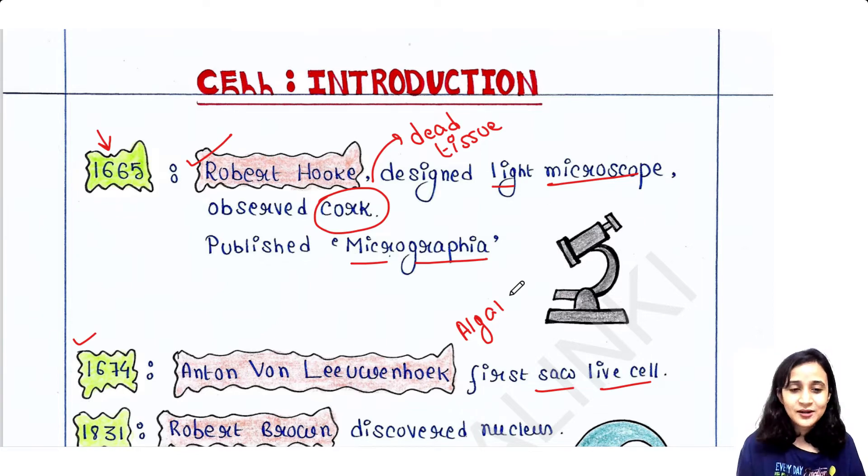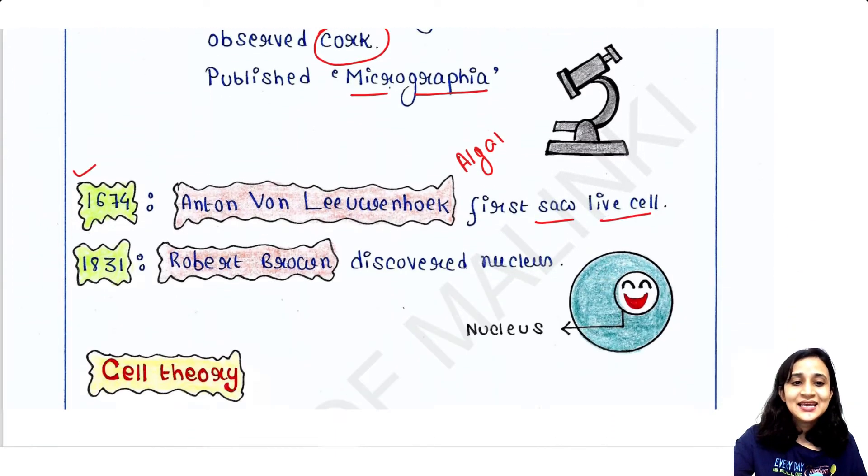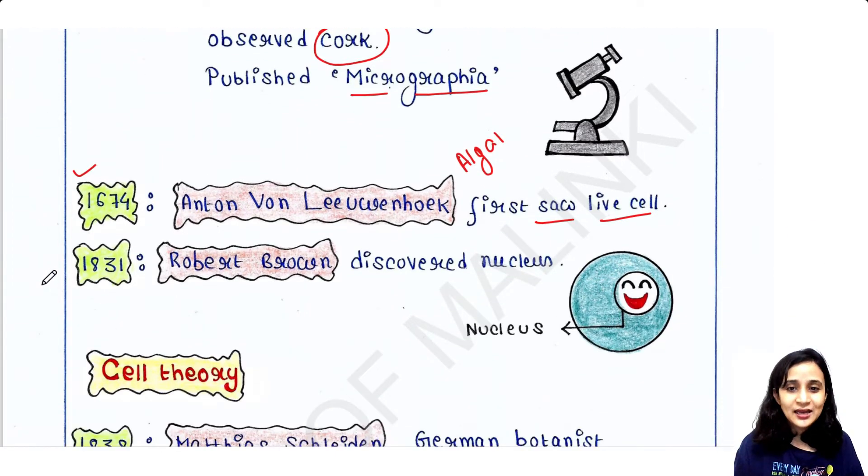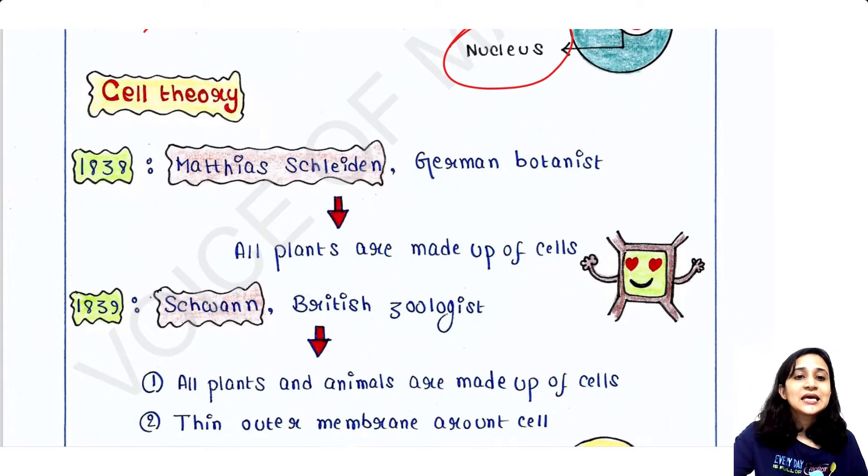Then in 1831, the person Robert Brown discovered nucleus. So before that time, people understood cell-like structure is there, but before 1831 there was no concept of nucleus. This person first time discovered nucleus in the cell. In cell theory, we will understand three theories.